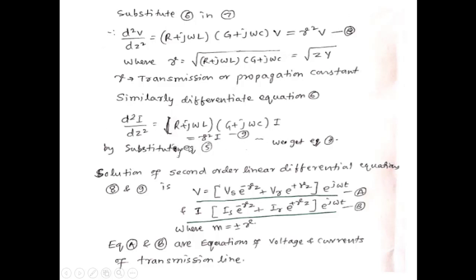The solution to these second-order differential equations 8 and 9 is: V = Vs·e^(−γZ)·e^(jωT) + Vr·e^(+γZ)·e^(jωT), where Vs is the sending-end voltage and Vr is the reflected voltage. And I = Is·e^(−γZ)·e^(jωT) + Ir·e^(+γZ)·e^(jωT). Equations A and B are the voltage and current equations for the transmission line.